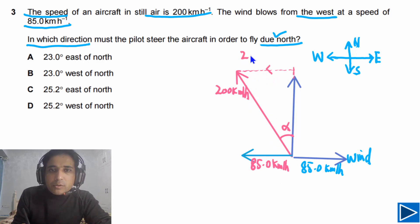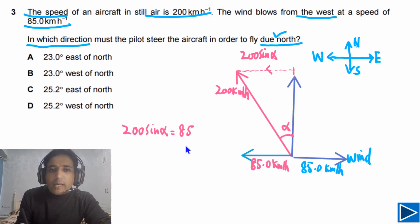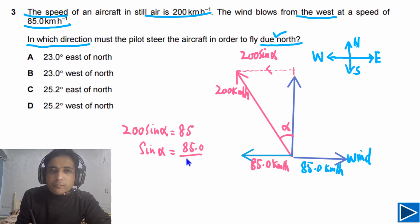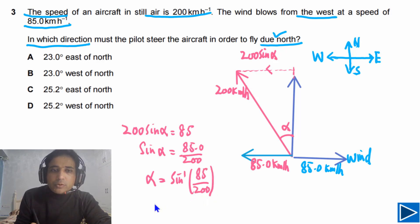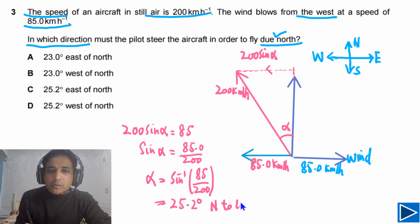So 200 sine of alpha has to be equal to 85. We can write down: sine of alpha equals 85.0 divided by 200. From here, alpha equals sine inverse of 85 divided by 200. The value of alpha will be equal to 25.2 degrees — the angle from north to the west.